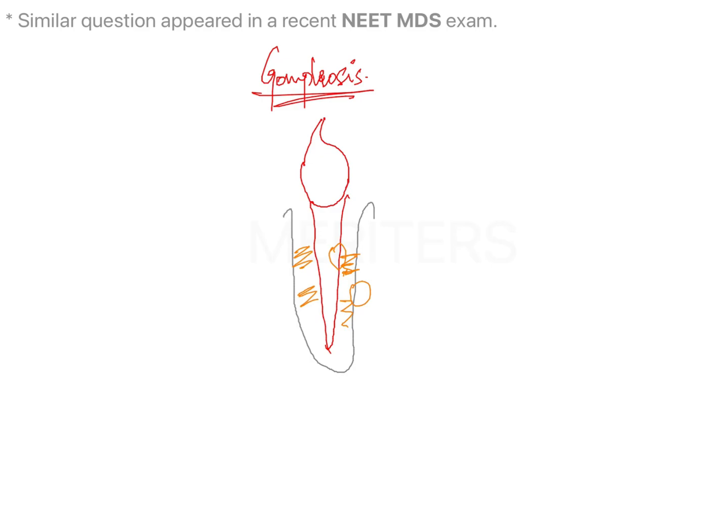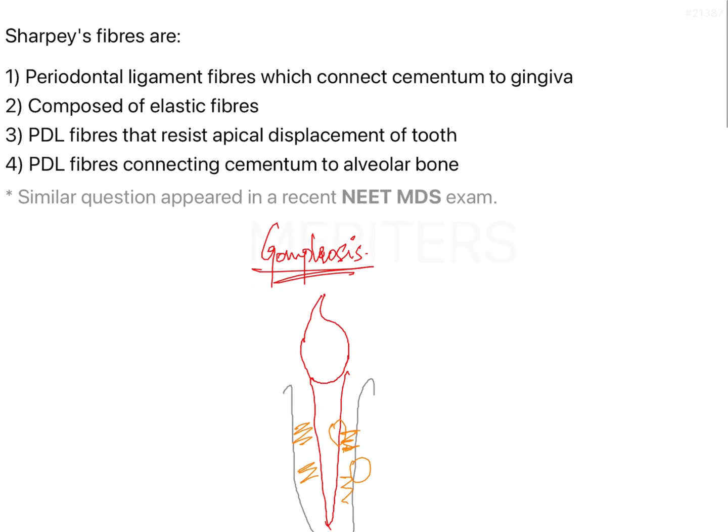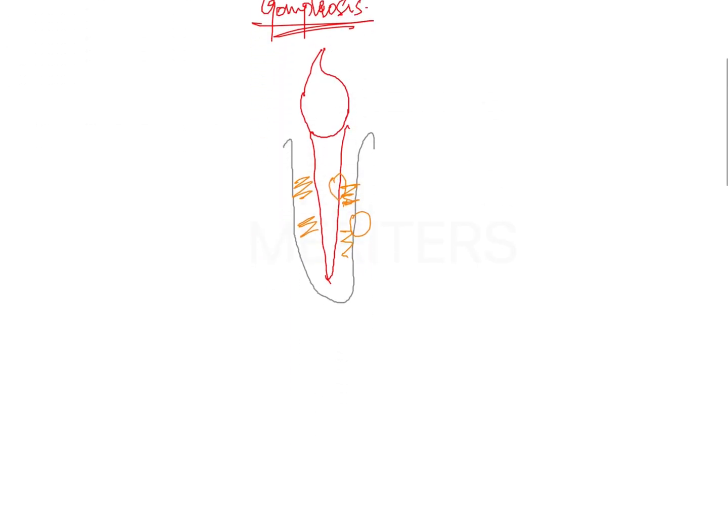The cementum provides a furnishing medium for the periodontal fibers to get anchored onto the tooth. Therefore, one of the main functions of cementum is attachment — it anchors the periodontal ligament fibers to the tooth structure.